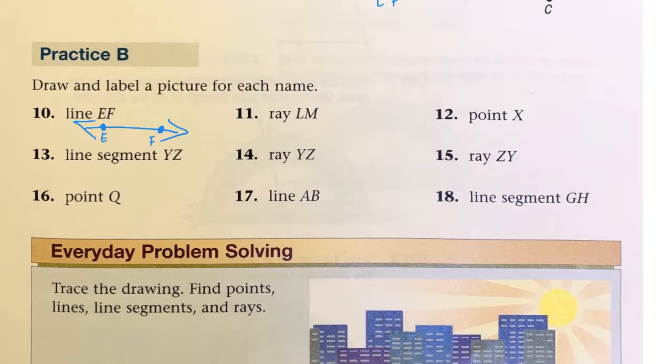Now, here's a ray LM. So, we could draw one endpoint and then another point. Now, the endpoint has to be L. And that one would be M.